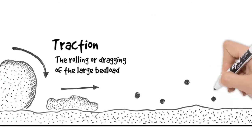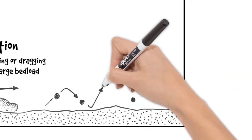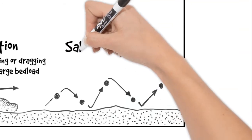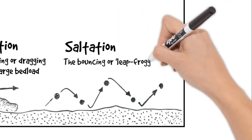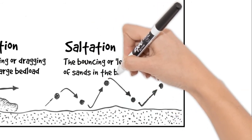We then look at the smallest sand grains which are part of the bed load, they bounce along the river in a process called saltation. So we can show those with an arrow bouncing along the riverbed.